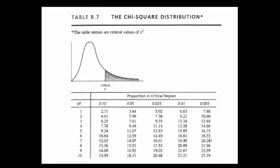This is a picture of the chi-square distribution table that you'll be using to find critical values — you can see that positively skewed distribution. Your degrees of freedom are listed down the side, and your alpha level is across the top, representing the proportion in the critical region.